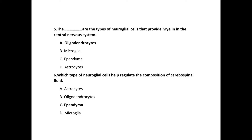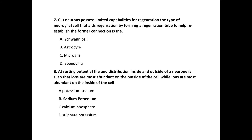Next question: which type of neuroglial cells help regulate the composition of cerebrospinal fluid? The correct answer is ependyma. Next question: cut neurons possess limited capabilities for regeneration. The type of neuroglial cell that aids regeneration by forming a regeneration tube to help reestablish the former connection — the correct choice is Schwann cells.